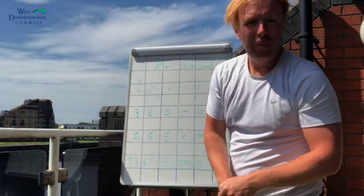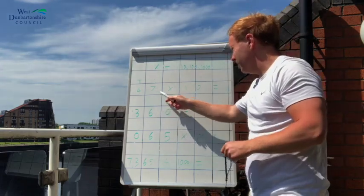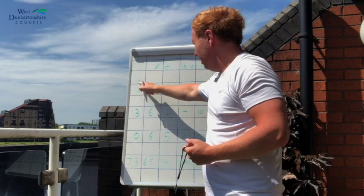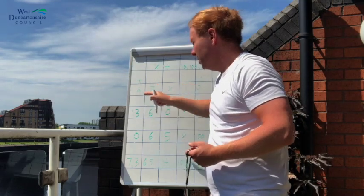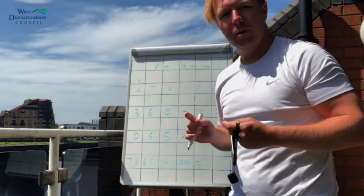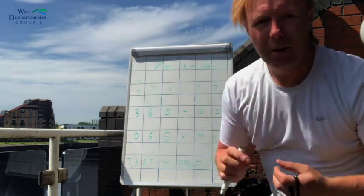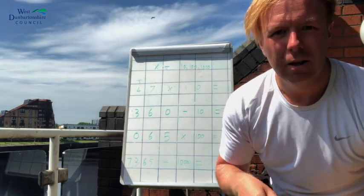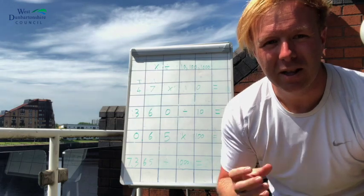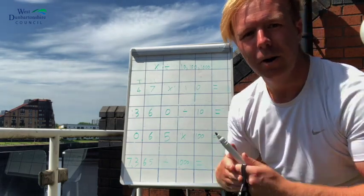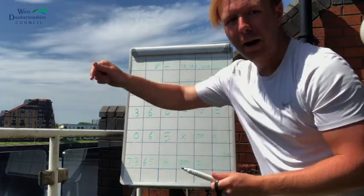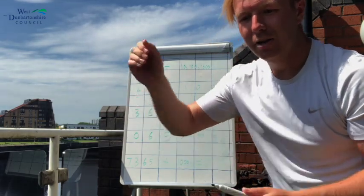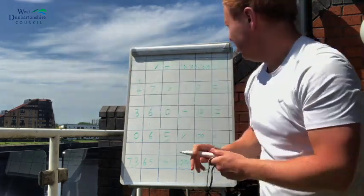The first problem I've got is 47 times 10. You'll see I've labelled up four tens, seven units. Now, what happens to our numbers? A lot of people come up to me and say you just add a zero. Now, that's going to get us stuck later on and we're going to start making mistakes if we use that logic. What happens to the number is it actually moves one place value.